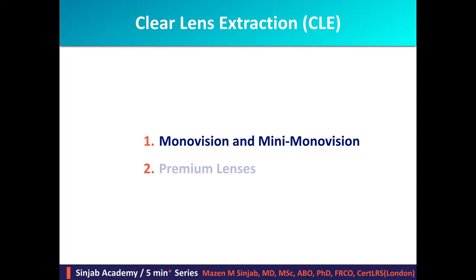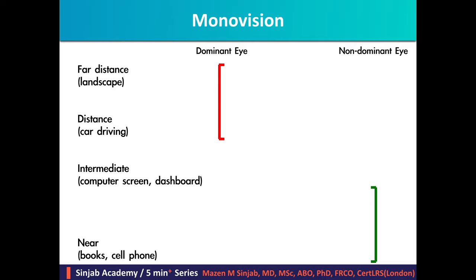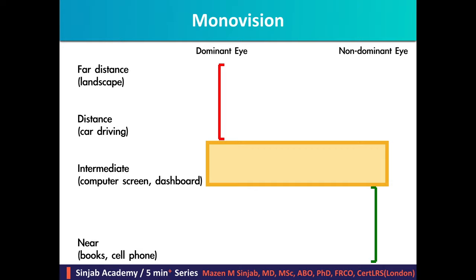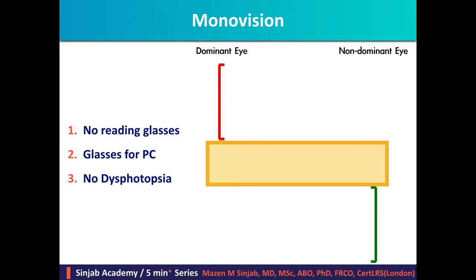Starting with the mono and mini-mono vision method. In mono vision, both eyes are implanted with monofocal lenses. The dominant eye is targeted for distance, while the non-dominant eye is targeted to be myopic by minus 1.25 to minus 1.75 diopters to aid near vision. This creates a gap in the intermediate vision, which is important for computer working distance and car dashboard. Therefore, this patient won't need glasses for reading, but will need them for PC use.